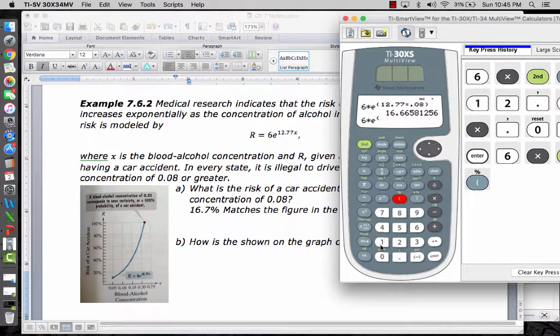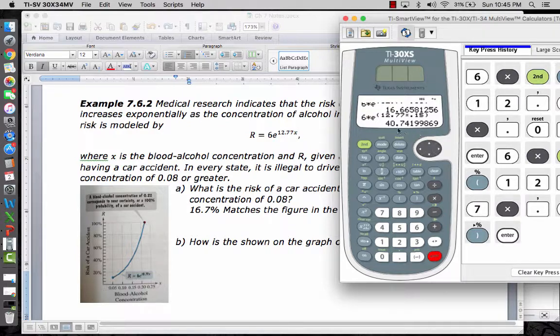So if I do 6 times second ln to get the e, and then I'm going to do parenthesis 12.77 times 0.15 blood alcohol concentration, I get a risk of 40.74%. So the graph isn't showing it perfectly, but it's right at 40%, so it's looking like that's matching.